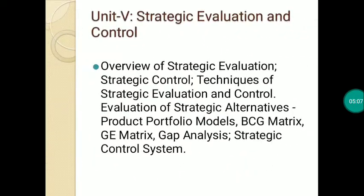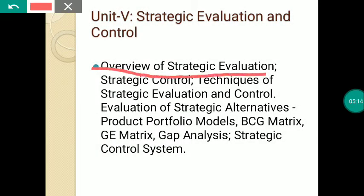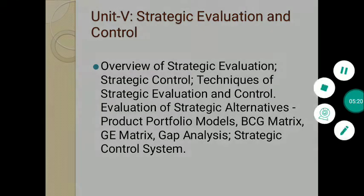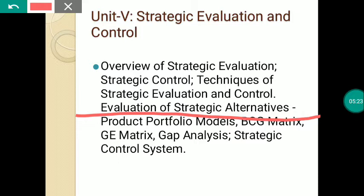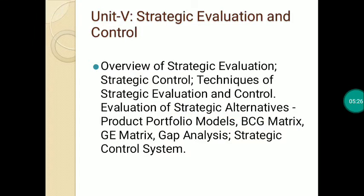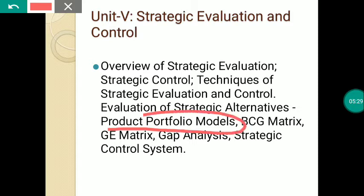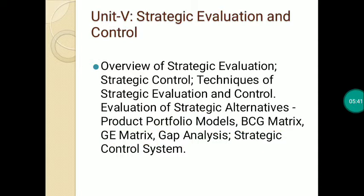The last unit is strategic evaluation and control. In this unit we study the overview of strategic evaluation, what is meant by strategic control, techniques of strategic evaluation and control, and evaluation of strategic alternatives. Different models are covered here: the product portfolio model, BCG matrix, GE matrix, gap analysis, and strategy control system. After deciding and implementing a strategy, we evaluate how effective that strategy was.